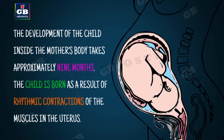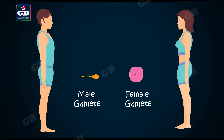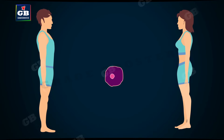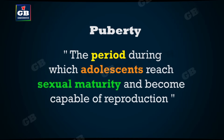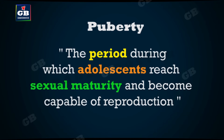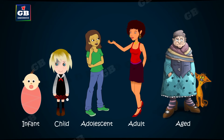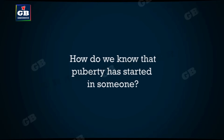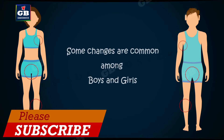Humans reproduce by sexual method, in which male reproductive cells fuse with female reproductive cells. But when do males and females start producing reproductive cells? They start producing reproductive cells at the beginning of a period called puberty. There is no specific age, but they enter puberty during adolescence — the stage between childhood and adulthood. We can notice the onset of puberty in boys and girls with some noticeable changes happening in their bodies.